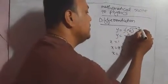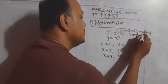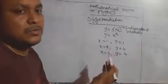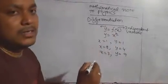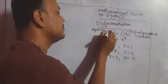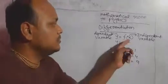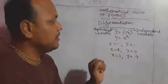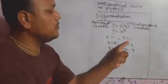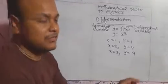Here, x is called the independent variable. The value of y depends on the value of x, so y is called the dependent variable. If we change the value of x, that is the independent variable, from 1 to 2, then the value of y changes from 1 to 4. If the value of x changes from 1 to 3, then the value of y changes from 1 to 9. Based on this change of variables, the mathematics of differentiation is created.